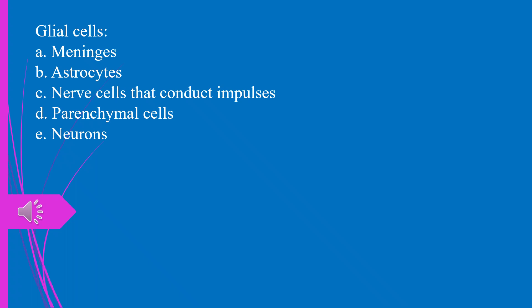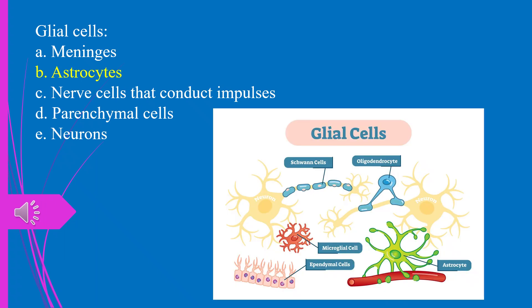Glial cells, A. Meninges. B. Astrocytes. C. Nerve cells that conduct impulses. D. Parenchymal cells. E. Neurons. The answer is B. Astrocytes.